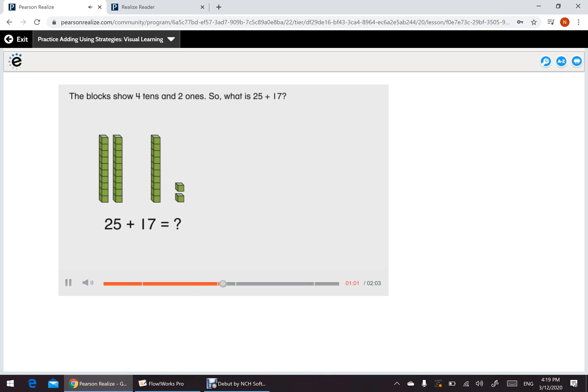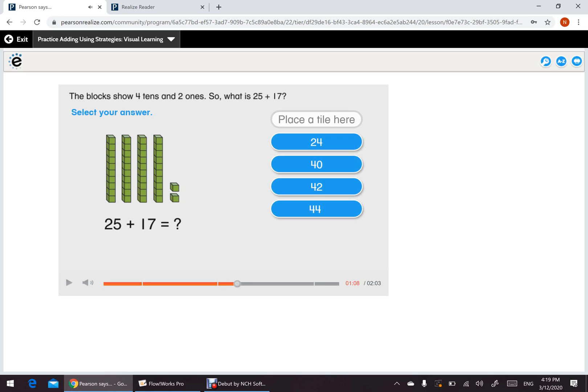The blocks show 4 10s and 2 1's. So, what is 25 plus 17? Select your answer. So, can you tell me the answer? How many 10s do we have here? 1, 2, 3, 4. And how many 1's? 2 1's. Excellent. Our answer is 42.